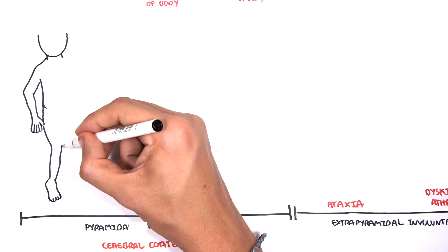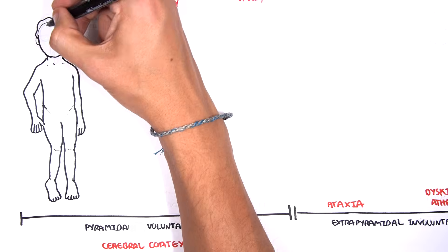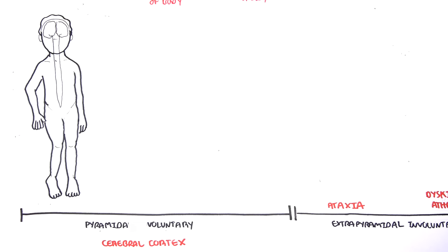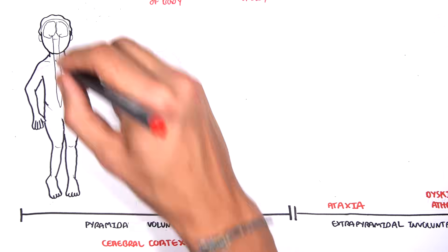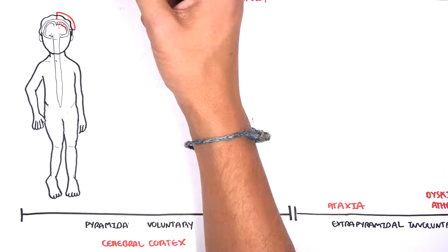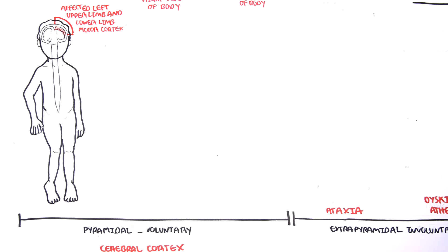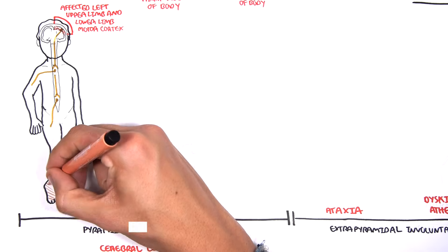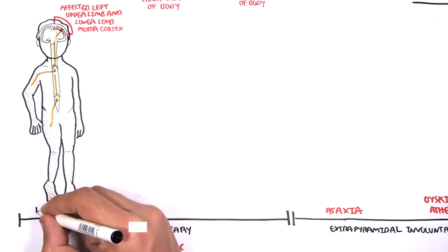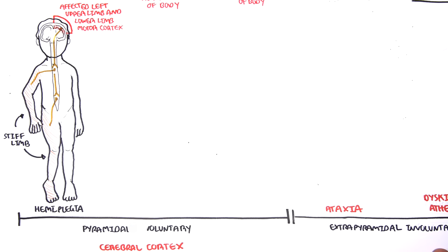Focusing on spastic cerebral palsy, which affects the cerebral cortex — cerebral palsy is categorised not only by the area of the brain affected, but also by how much of the body is affected. For example, if the affected regions of the motor cortex are the left upper limb and lower limb regions, then the right upper limb and right lower limb are affected. This person will have stiff limbs with increased tone on the right side. Because half of the body on one side is affected, this is called hemiplegia.